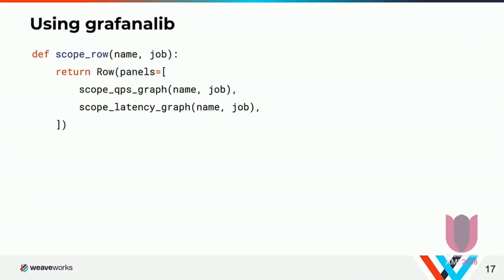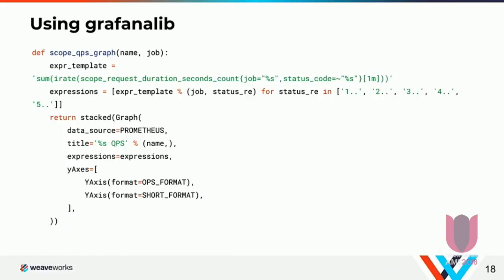A scope row takes a name and a job and returns a row. It has a QPS graph and a latency graph. If you saw Tom's talk yesterday, this is standard RED method graphs, and we really like these. The QPS graph, drilling in a little bit more, builds a Prometheus expression — in fact five Prometheus expressions, one for each kind of HTTP response code — and then returns a graph which is stacked. You can see the stacked function there, which is our local style-specific stacking, because we like zero line width and things for stacked graphs, so we make that really nice and easy.